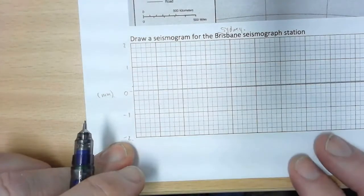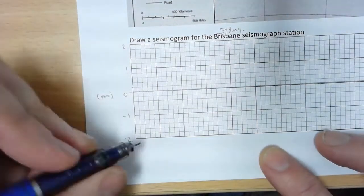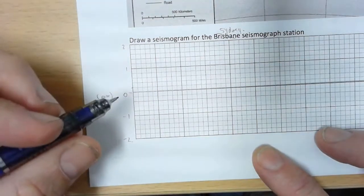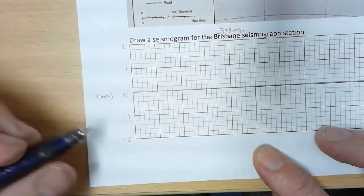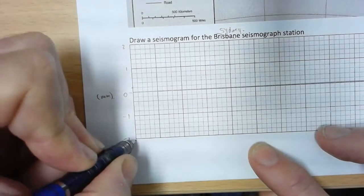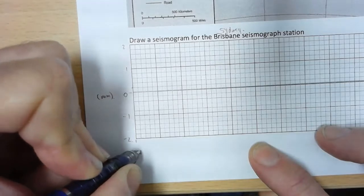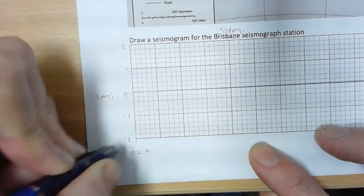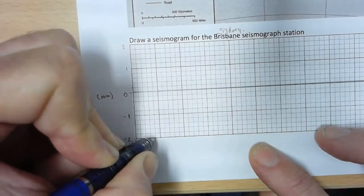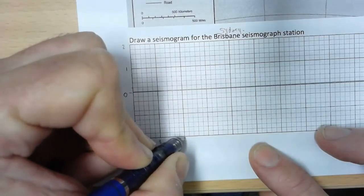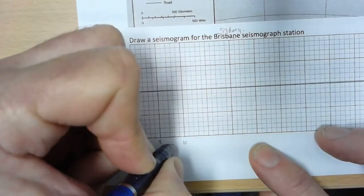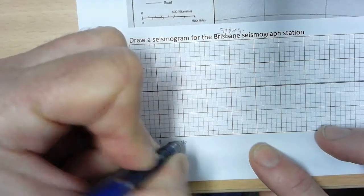On our x-axis, we need to put our time. I'm actually going to start at 10:25 here, and each one of these little lines is going to be a second. So here is 10:25:00, and then we've got 1, 2, 3, 4, 5 seconds, 6, 7, 8, 9, 10. So that's 10:25 and 10 seconds.